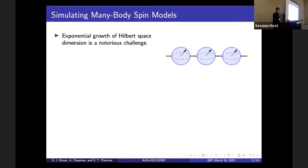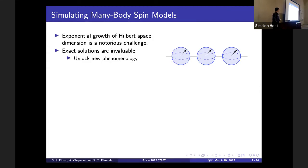Our goal is to simulate many-body spin systems. A notorious challenge for doing this is the exponential growth of the Hilbert space dimension with the number of spins in the system. As a consequence, we really want exact solutions to these kinds of models — they give a whole plethora of new phenomenology, and they can also be used as a starting point for perturbation theory in models which are not solvable, such as interacting models or models just outside of this exact solution formalism.